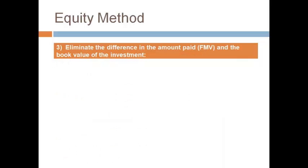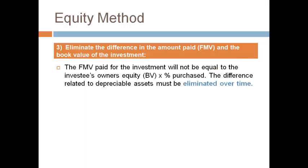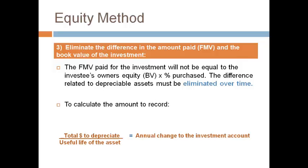The third entry eliminates the beginning difference between the fair market value of the investment at the time of purchase and the total owner's equity reported by the investee. The goal of the equity method is to report the investment at the percent of ownership of the investee's owner's equity. To accomplish this, the differences in fair market value at the time of purchase and the book value on their balance sheet must be removed. The investor will know which assets had a different fair market value than book value, and the difference is divided by the useful life of the asset to get the amount recorded each period.